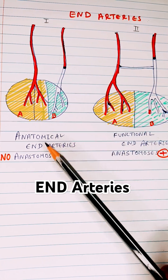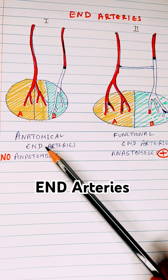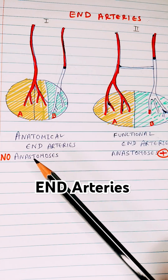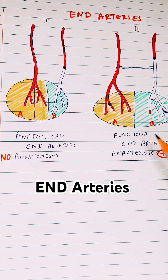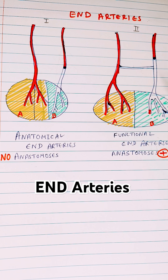The common example of an anatomical end artery is the central artery of the retina. Examples of functional end arteries include the coronary arteries, splenic artery, and renal arteries.